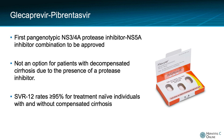Glecaprevir-pibrentasvir is the first pan-genotypic NS3-4A protease inhibitor and NS5A inhibitor combination to be approved, offering a potent treatment option for the vast majority of patients with chronic hepatitis C. This drug is not an option for patients with decompensated cirrhosis given the presence of a protease inhibitor. In the main registration trials for treatment-naive individuals, sustained virologic response rates for eight weeks of glecaprevir-pibrentasvir were in the range of 95% or greater, with very few, if any, on-treatment virologic breakthroughs or post-treatment relapses.